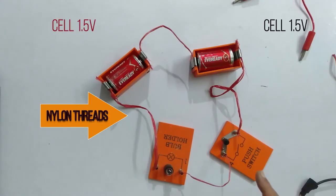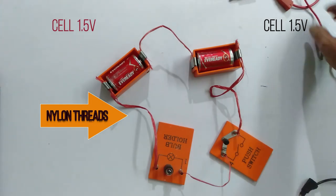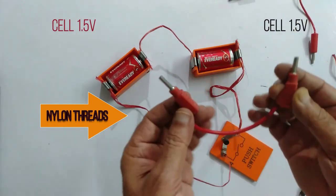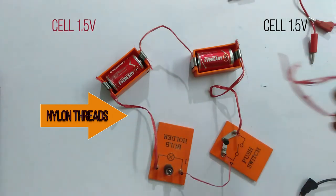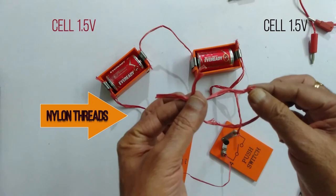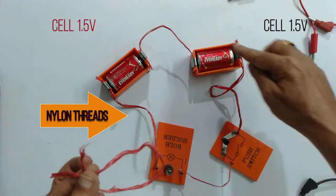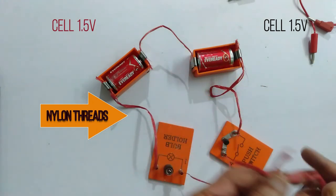This circuit is as good as activity one. What is the difference? In place of these copper wires, I have connected this nylon threads. That is, the circuit is completed with the help of the nylon threads.